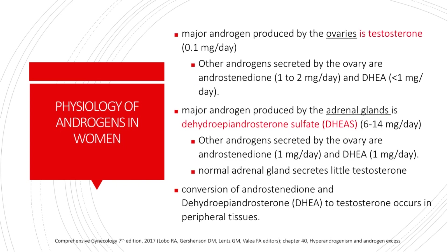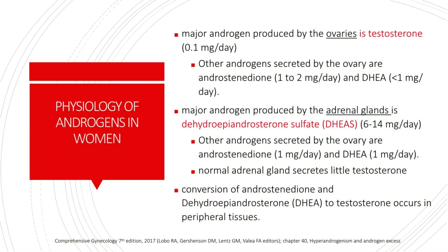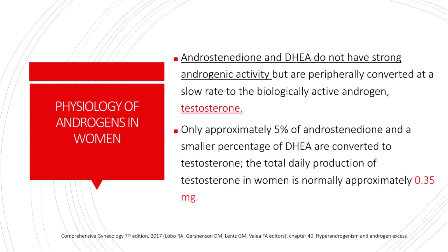Now let's talk about the physiology of androgens in women. The major androgen produced by the ovaries is testosterone. The other androgens secreted by the ovary are androstenedione and DHEA. The major androgen produced by the adrenal glands is DHEAS, or dehydroepiandrosterone sulfate. The other androgens produced by the adrenal glands are androstenedione and DHEA. Normal adrenal glands secrete little testosterone. Conversion of androstenedione and DHEA to testosterone occurs in peripheral tissues. Only approximately 5% of androstenedione and a smaller percentage of DHEA are converted to testosterone. The total daily production of testosterone in women is normally approximately 0.35 mg.